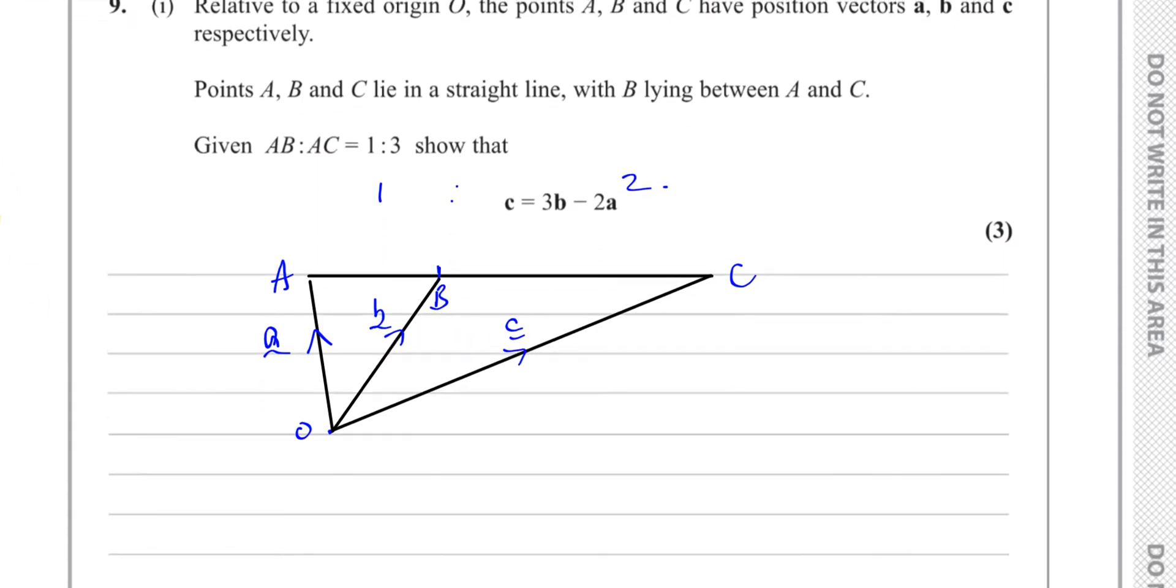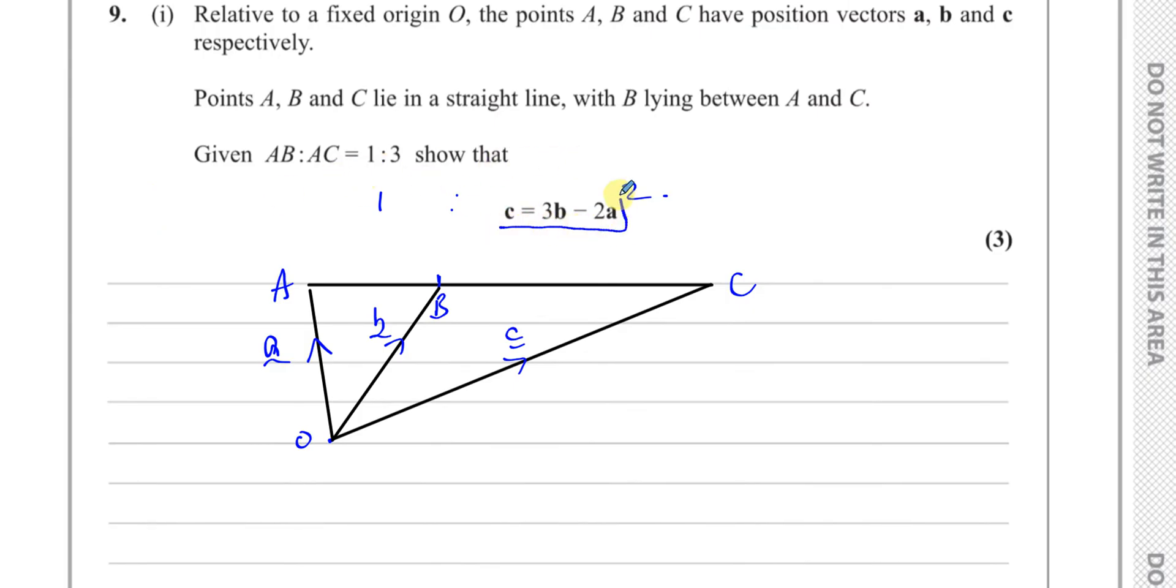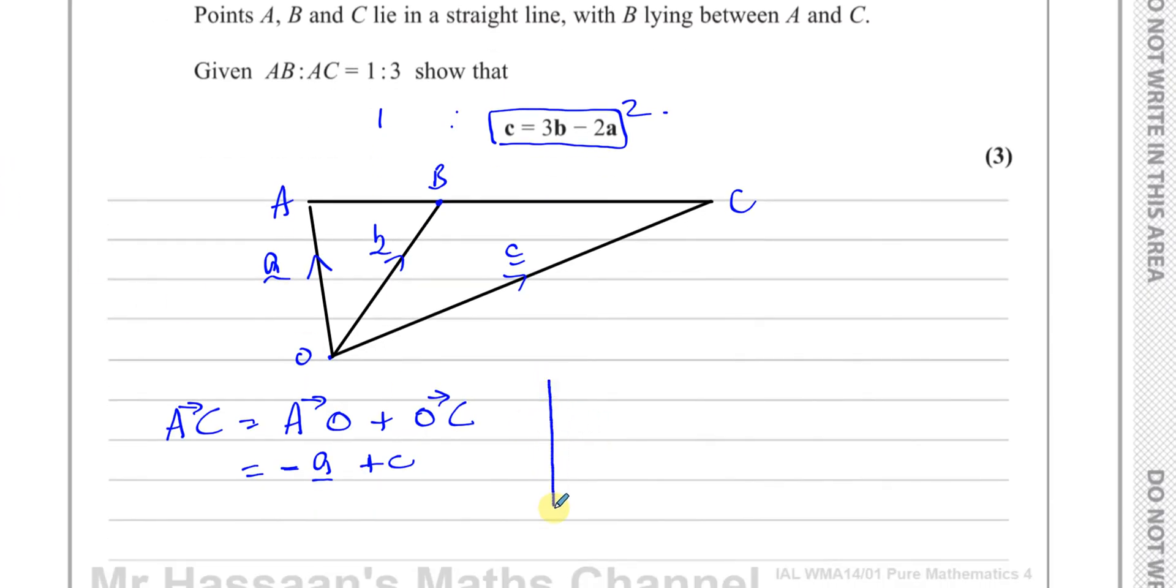Now, it says, given that AB to AC is one to three, show that c equals three b minus two a. So we need to basically find a way of expressing one of these lengths in two different ways. That's what we need to do. So what I'm going to do is I'm going to say, let me look at the length from A to C. And let me express it in one way with c in there. So with the vector c in there. So if you think about A to C, you can go from A to O. And then you can go from O to C. A to O, then O to C. Now that will give you the vector minus A plus C. A to O is minus A. O to C is plus C. That takes you from A to C. Now that's one way of getting from A to C. There's also another way of getting from A to C.